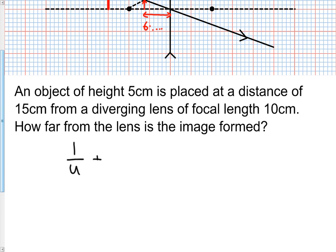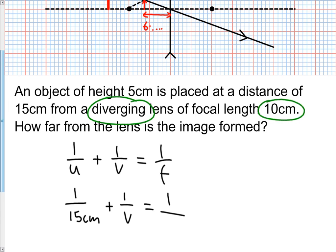Let's try the lens formula and see what it says. 1 over u plus 1 over v equals 1 over f. Let's put the numbers in. The object distance is 15cm, so 1 divided by 15cm plus 1 over v is 1 over f. But remember, this is a diverging lens. The convention is to make this thing negative, so 1 over minus 10cm.